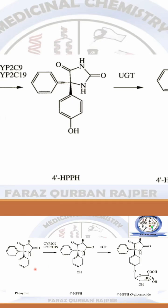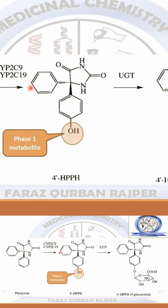The CNS depressant drug phenytoin will undergo Phase 1 reaction, which is facilitated by cytochrome enzyme. After Phase 1 reaction, you may observe a new functional group — hydroxyl — has been introduced into the structure. This is the hydroxylation reaction.